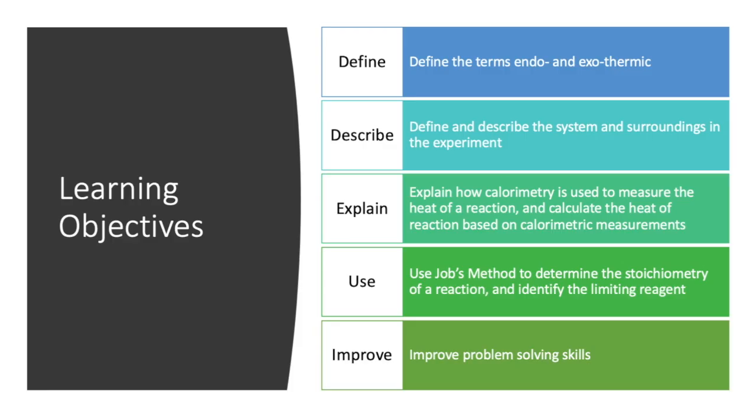So our learning objectives today are to define endo- and exothermic, define and describe the system and surroundings in the experiment, explain how calorimetry is used to measure the heat of the reaction, and also calculate the heat of reaction based on calorimetric measurements. We're going to use Job's method to determine the stoichiometry of the reaction and identify the limiting reagent, and our process skill for today will be problem-solving.